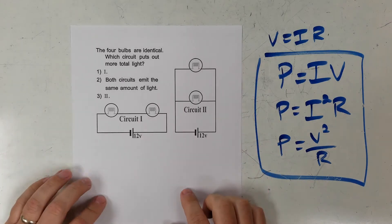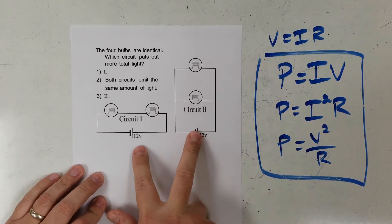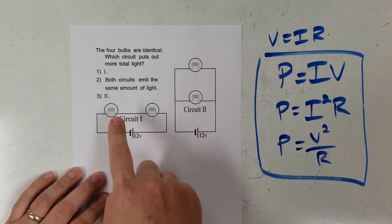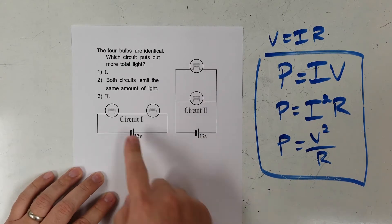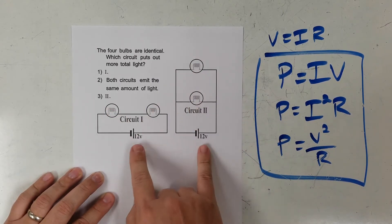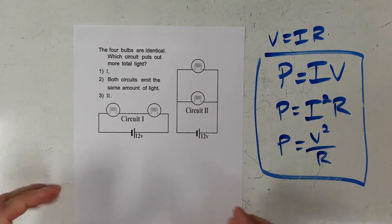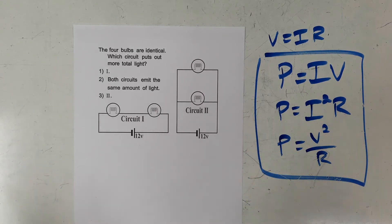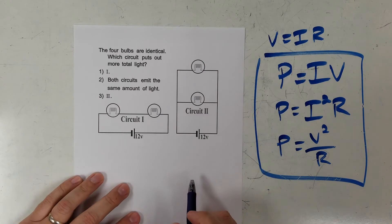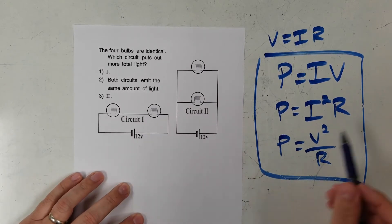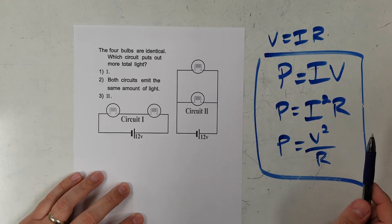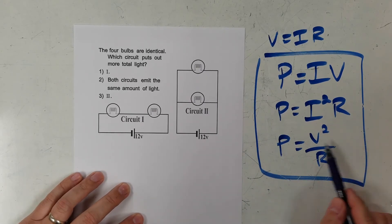Here's my third problem. I have two circuits and I want to know which one is going to emit the most light. All four bulbs are the same and both circuits are connected to 12-volt batteries. Which one is going to be the brightest and emit the most light?